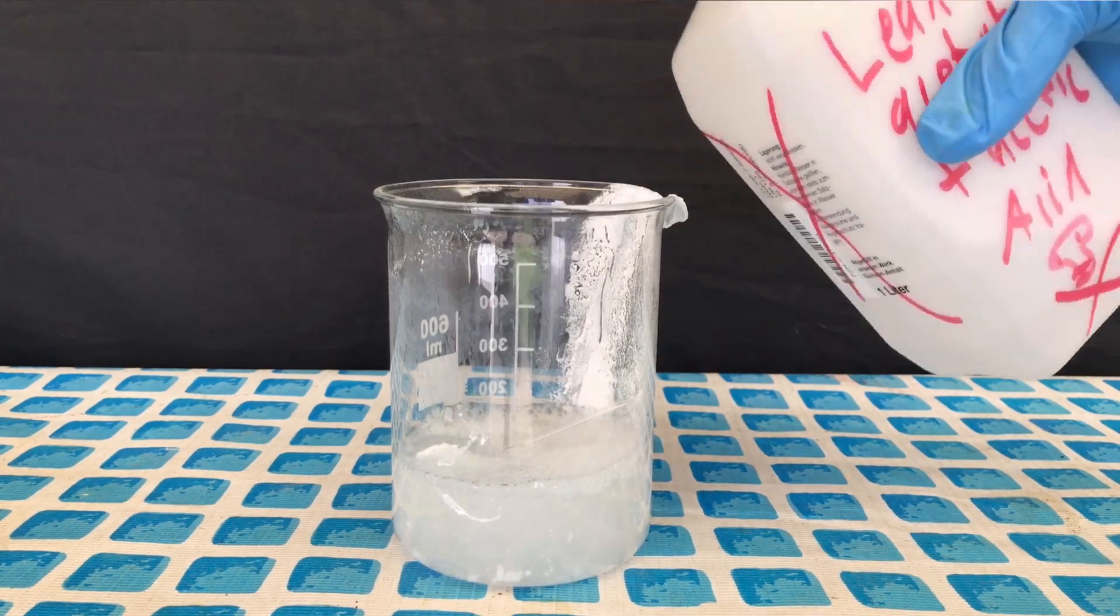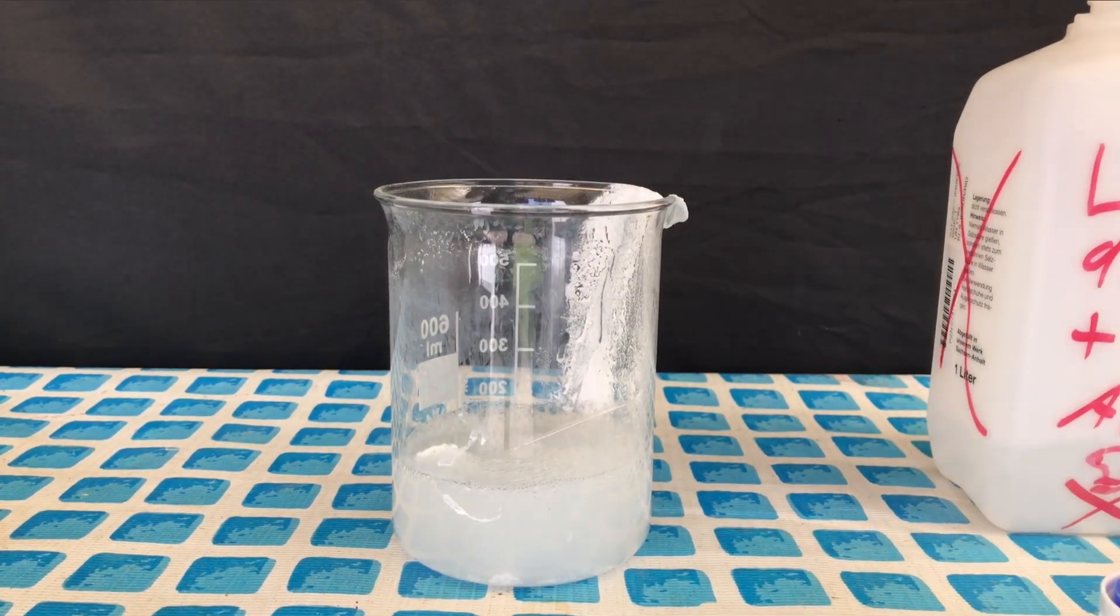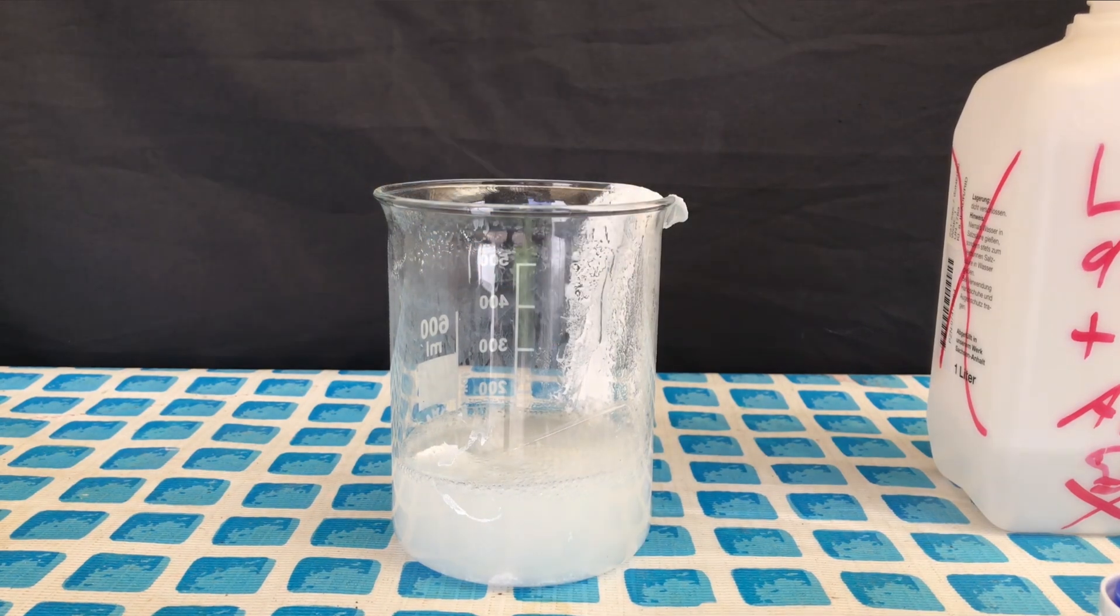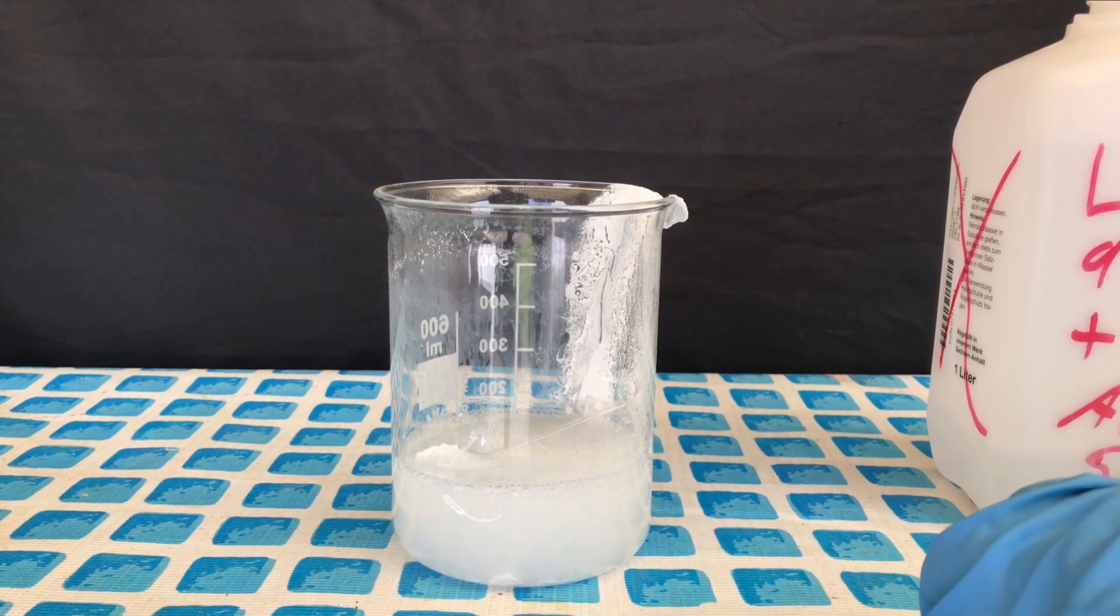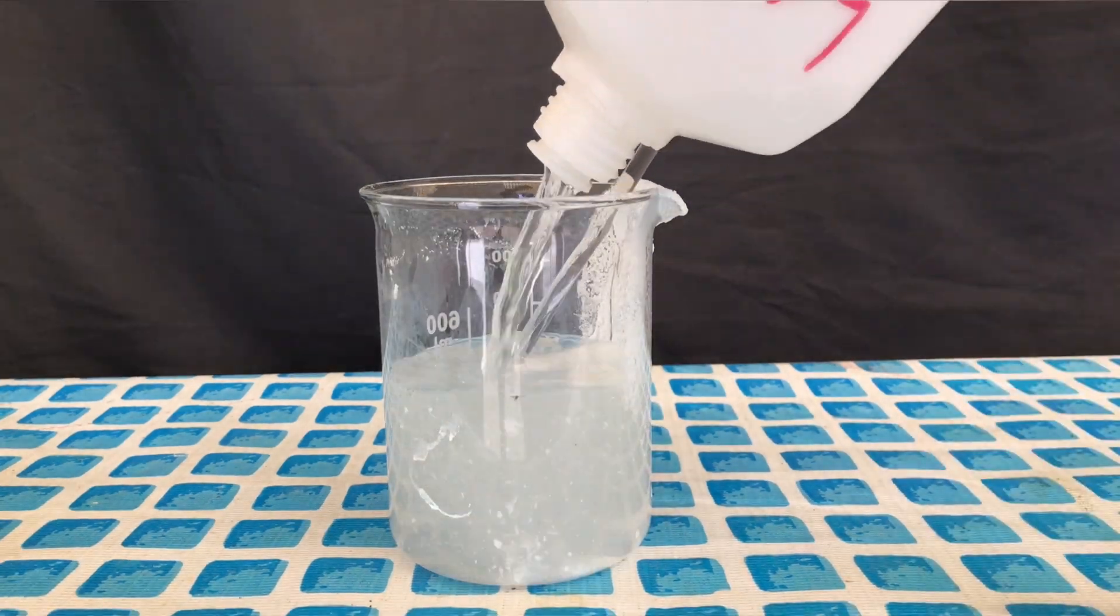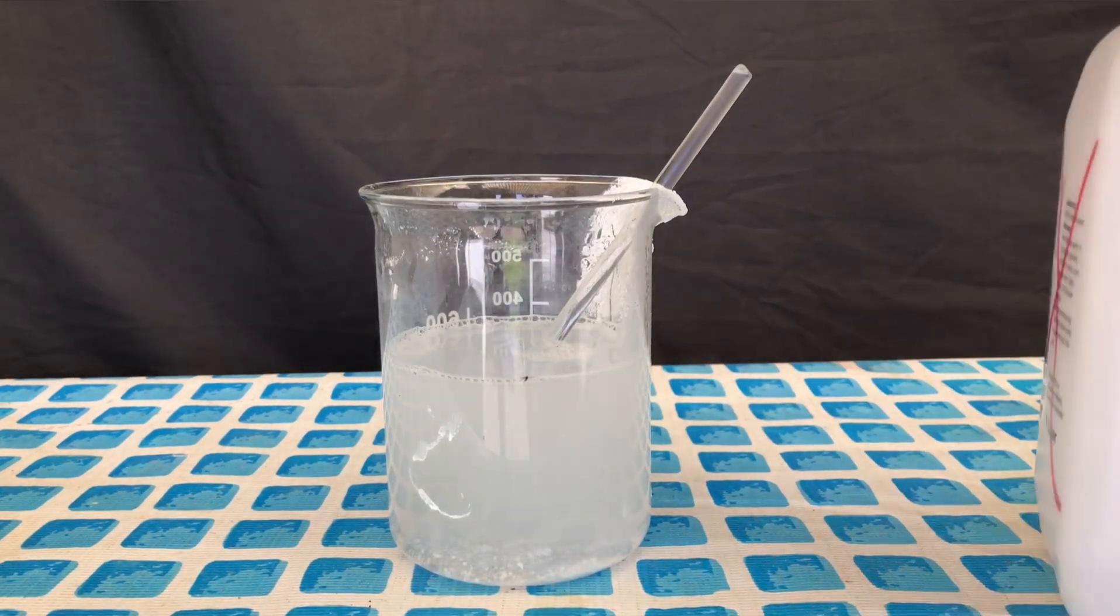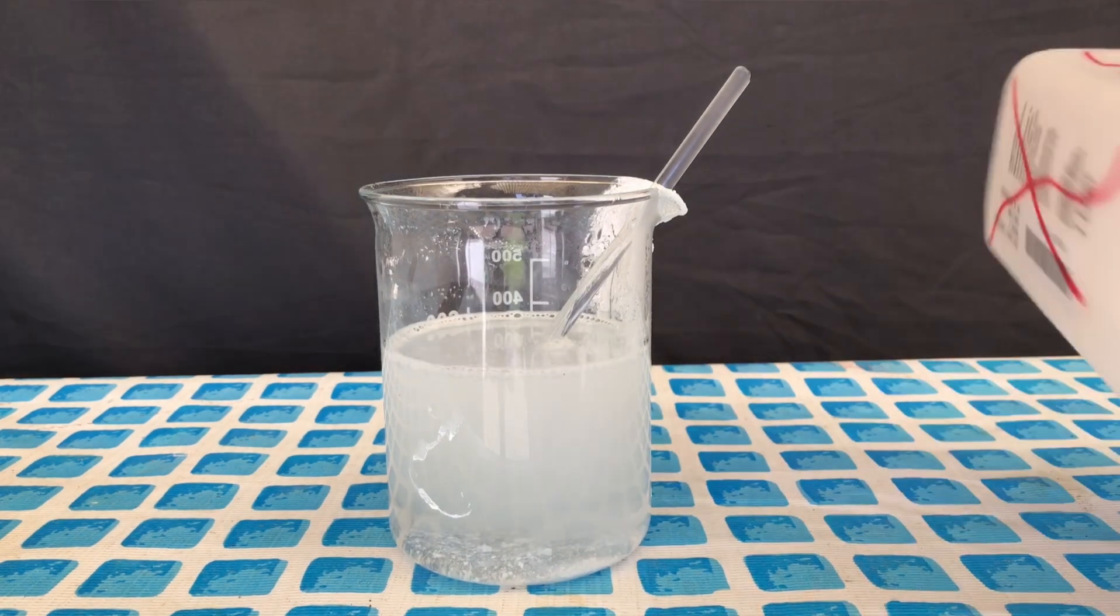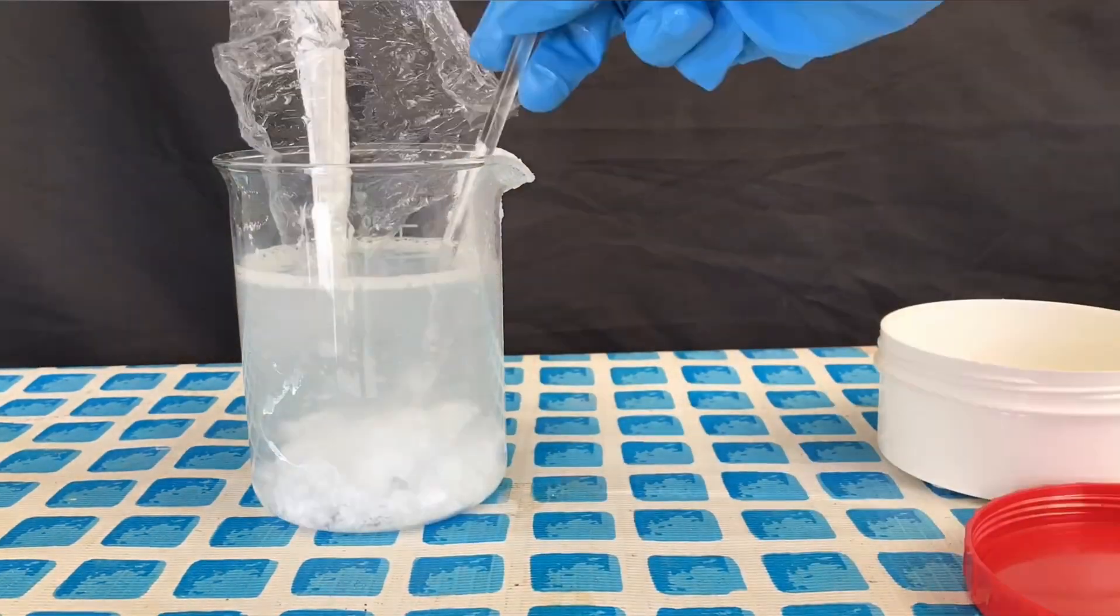The first objective therefore is to get all of the lead acetate into solution. Some lead acetate solution containing some acetic acid was added to the beaker. It took quite some time and a lot of stirring but in the end I managed to dissolve most of it. Some stayed undissolved but that shouldn't be a problem.